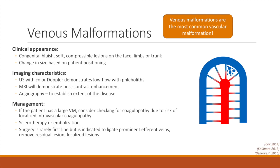Venous malformations will also show T2 enhancement, but unlike lymphatic malformations, will demonstrate post-contrast enhancement. For treatment planning, angiography is an additional modality that can help demonstrate the extent of the lesion and will also help reveal any arterial involvement if there is any suspicion of a component of arteriovenous malformation. In cases of large venous malformations, there may be a localized intravascular coagulopathy. The first-line treatment for venous malformations is sclerotherapy or embolization. Surgery is not first-line, but may be performed in certain cases.